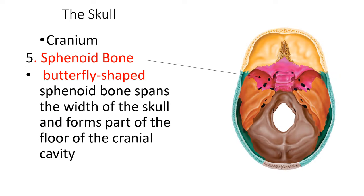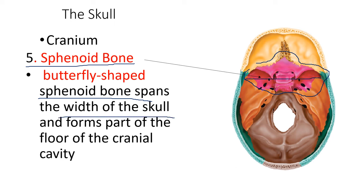Another part of the cranium is the sphenoid bone — the pink one — which is shaped like a butterfly. The sphenoid bone expands across the width of the skull and forms part of the floor of the cranial cavity. The floor of the cranial cavity is composed of the sphenoid bone, temporal bone, and occipital bone — while the parietal and frontal bones form the roof.